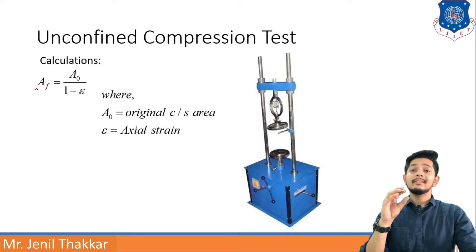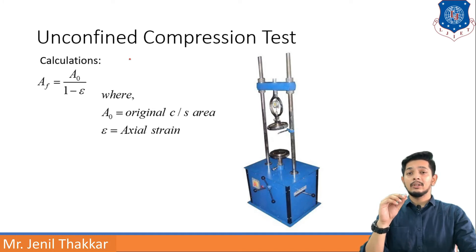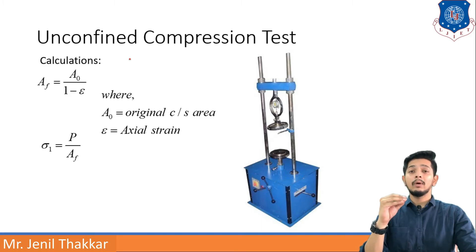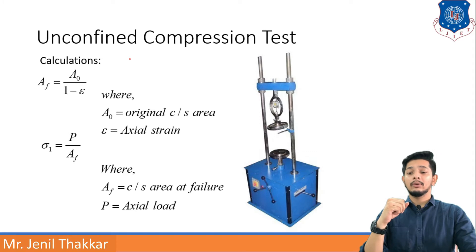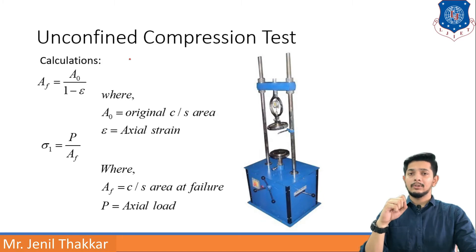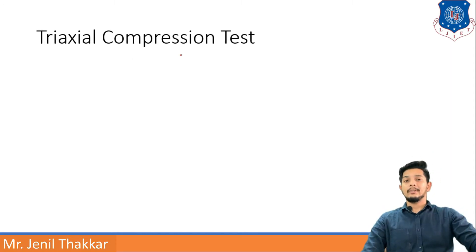Results are calculated as follows. The area at failure Af is found using: Af = A0 / (1 − ε), where A0 is the original cross-sectional area before testing and ε is the axial strain already determined. Another formula used is σ1 = P / Af, where P is the axial load applied and Af is the cross-sectional area at failure. This is how the unconfined compression test is performed.